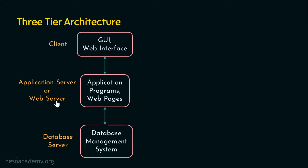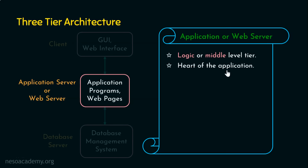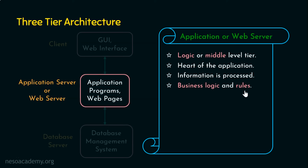The next tier is the application tier — the application server or web server. The front-end collects and displays information, but the transaction logic — such as transferring funds from your account to your friend's account — is implemented at the application level, the business logic level. This tier deals with the middleware tier activities and is the heart of the application because business logic, business rules, and information are processed here.